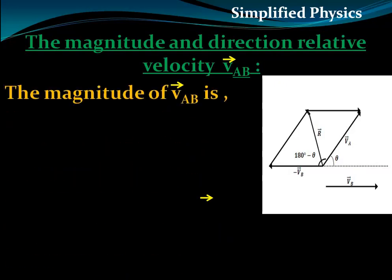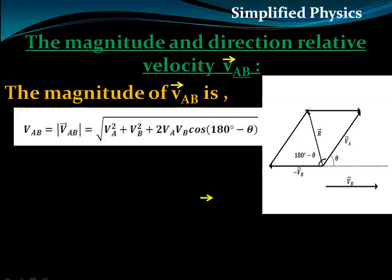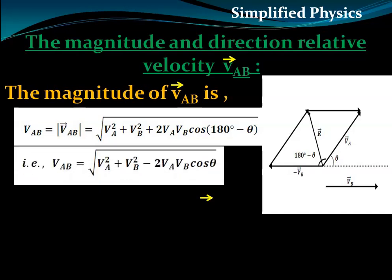To find the magnitude of the relative velocity of A with respect to B: since the angle between V_A and minus V_B is (180 minus theta), applying the parallelogram law gives V_AB equals the square root of V_A squared plus V_B squared minus 2·V_A·V_B·cos theta, because cos(180 minus theta) equals minus cos theta.